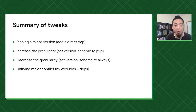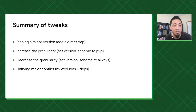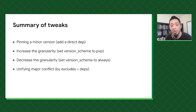Here's a summary of the tweaks: we can pin things, we can increase or decrease the granularity, and a lot of times we use unification to resolve major version conflicts.